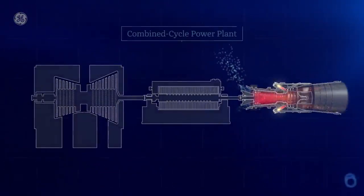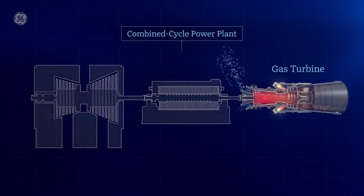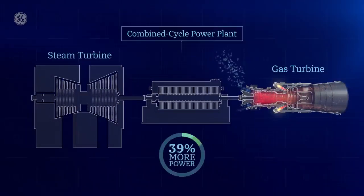In what's called a combined cycle power plant, the gas turbine can be used in combination with a steam turbine to generate 50% more power.